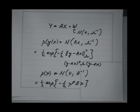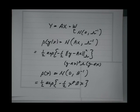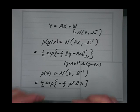When you take the probability distribution of p of y given x, the randomness is coming from w only — not from x, because it's the conditional distribution of y given x.